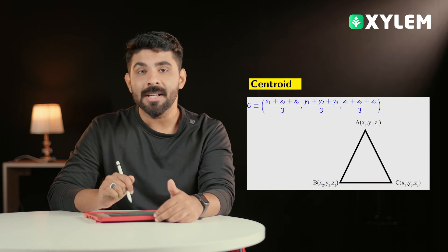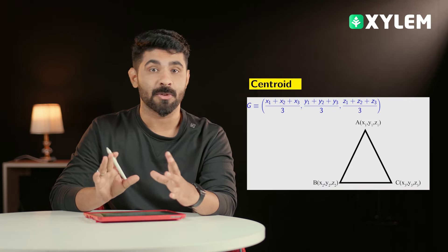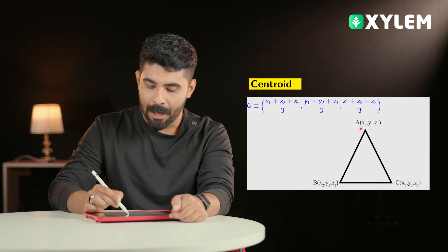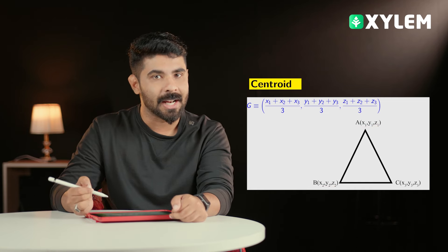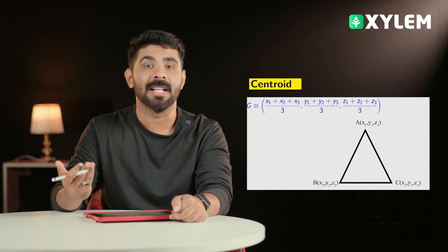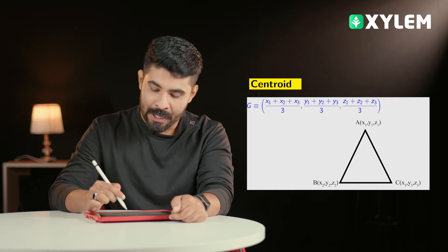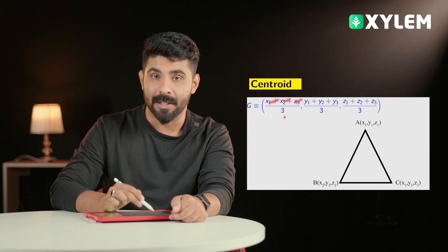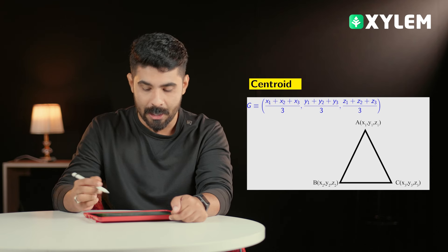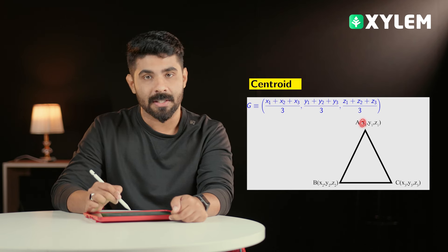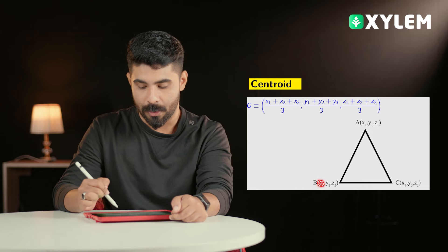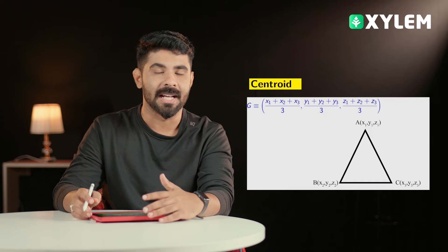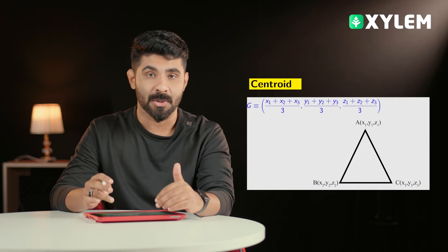This is the concept of the centroid. We are going to draw a triangle with three vertices, drawing a point in space with coordinates x1, y1, z1. For the centroid, the formula is x1 plus x2 plus x3 divided by 3, taking the first coordinate of each vertex as the corresponding coordinates, then dividing by 3 for the centroid.